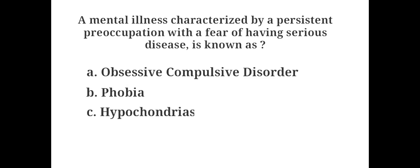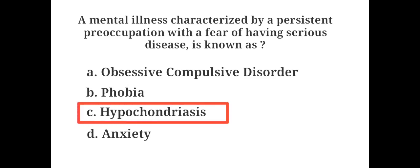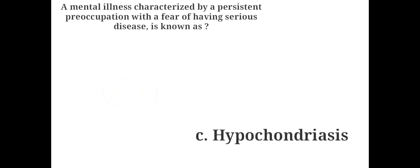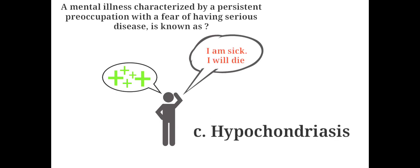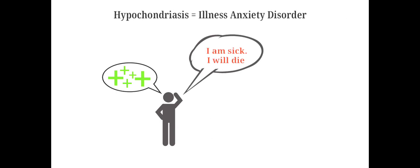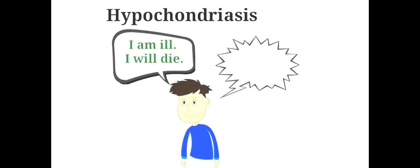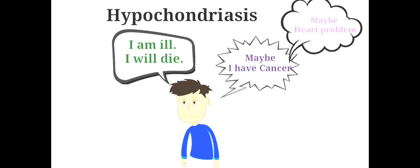A mental illness characterized by a persistent preoccupation with the fear of having a serious disease is known as: A. Obsessive-compulsive disorder, B. Phobia, C. Hypochondriasis, D. Anxiety. The answer is C. Hypochondriasis. Hypochondriasis, also called illness anxiety disorder, is a condition in which a person continuously worries about their health, believing they have a serious health problem which is not true.